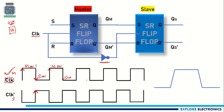Practically, if you look at the clock signal it looks like this — this is the practical clock signal. When the clock signal goes from 0 to 1 it will take some delay; we call it rise time, TR. Similarly, when it comes from 1 to 0 it will take some time we call fall time. So the clock takes rise time to go from 0 to 1 and fall time to come back from 1 to 0.